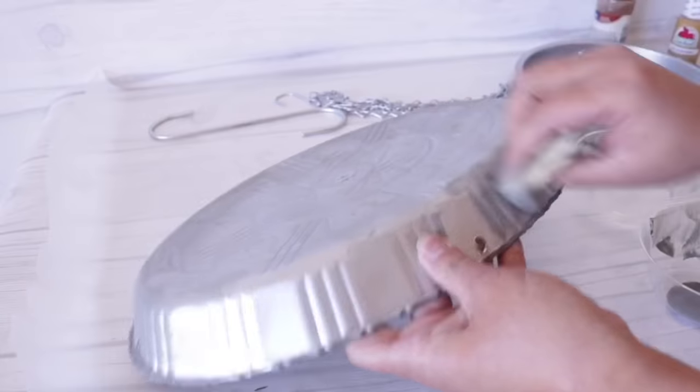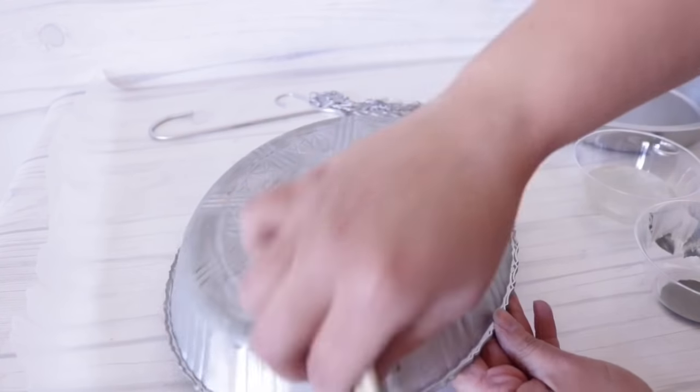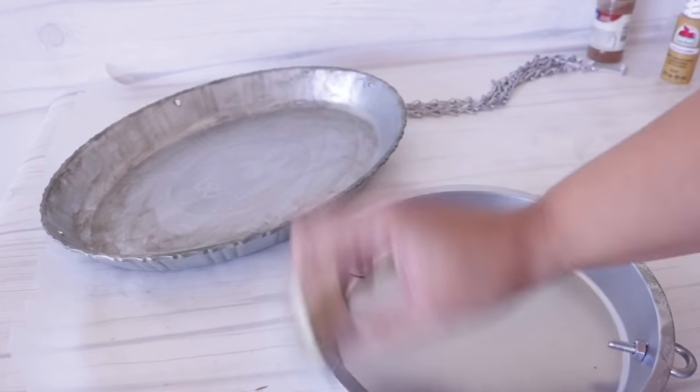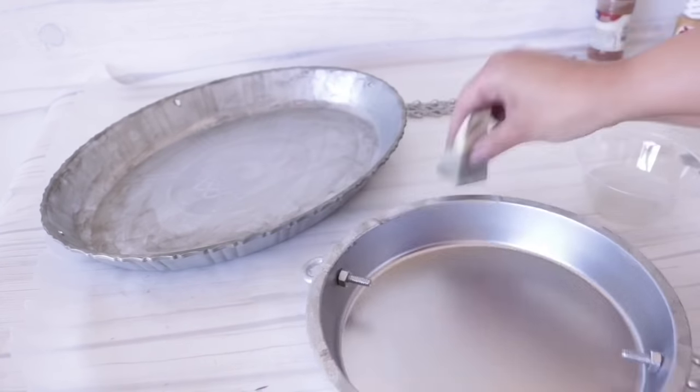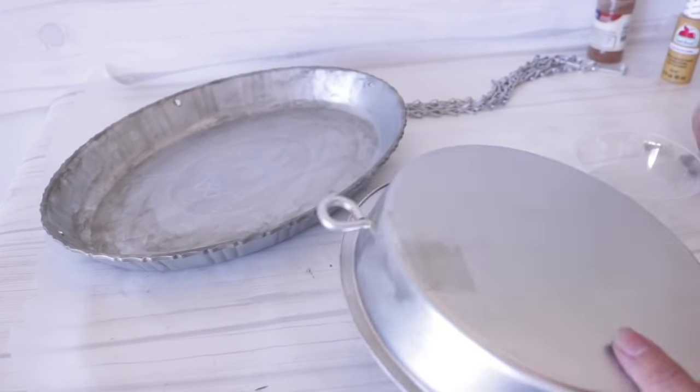You can always go back later with a darker gray and go over it if you don't like how it turns out. This is really forgiving because there's no right or wrong way.